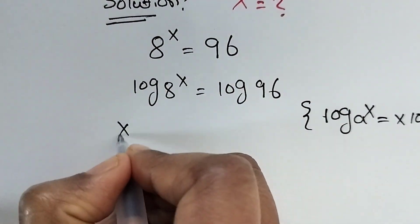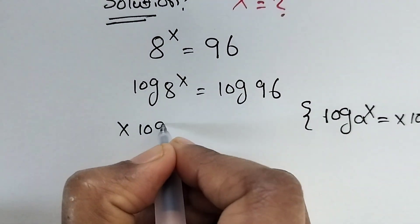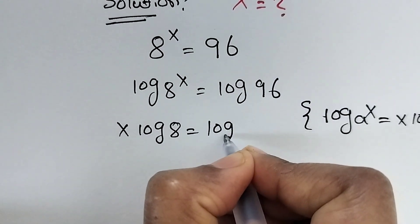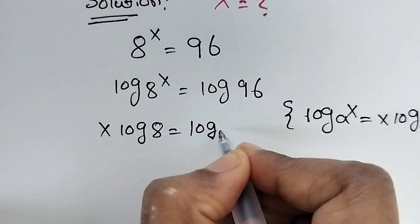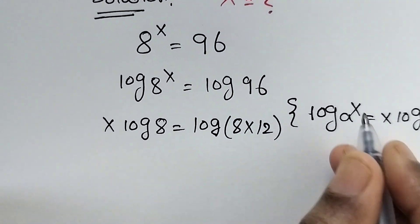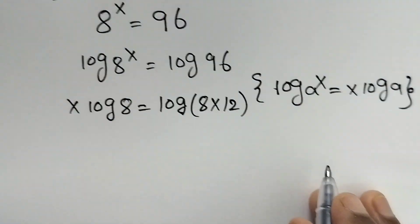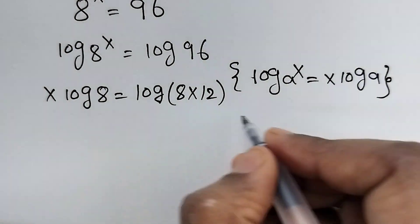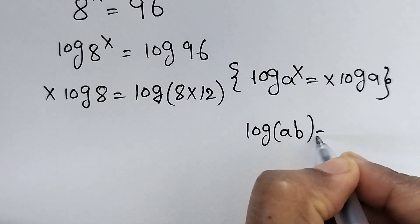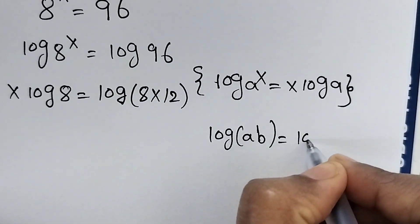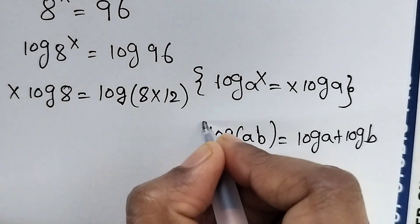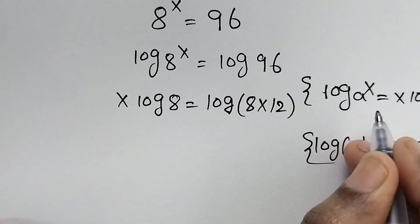Here we can write x log 8 is equal to — so here we have 96, and we can write this as 8 times 12, since 8 times 12 is equal to 96. So here this is in the form of log(a times b), which we can write as log a plus log b.